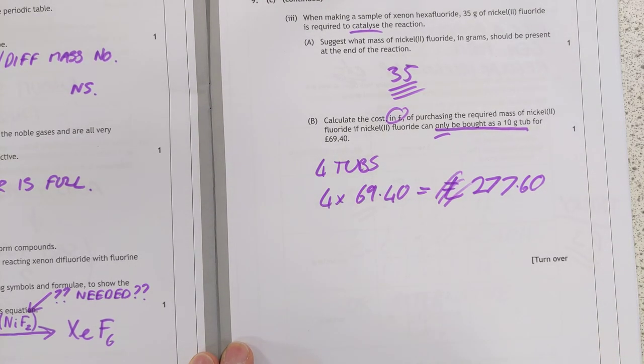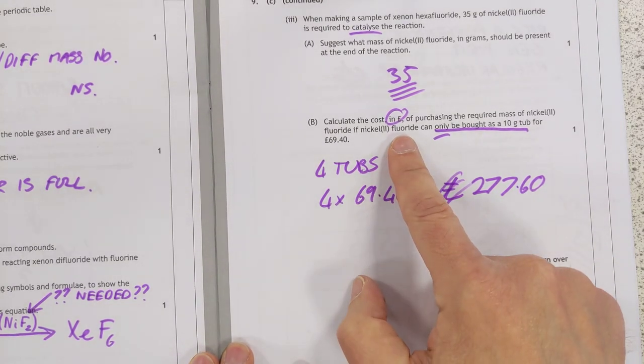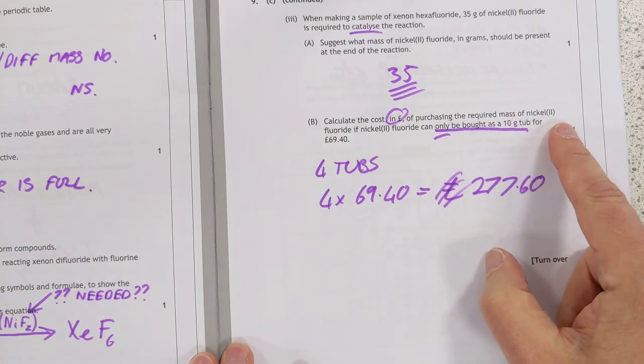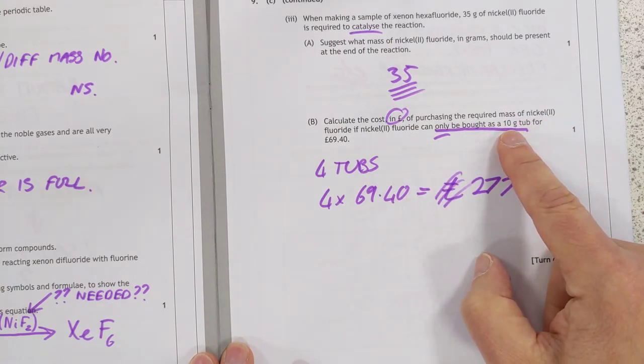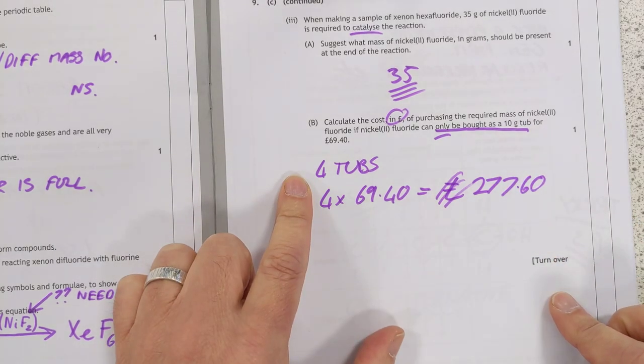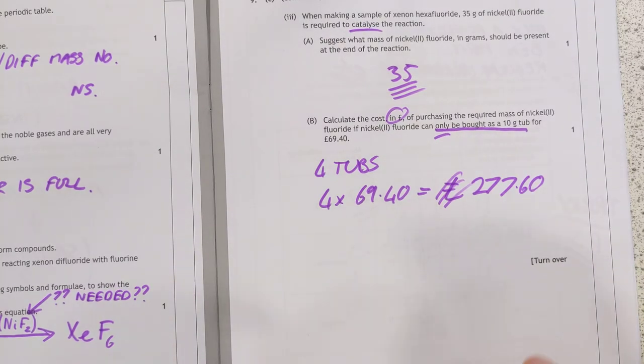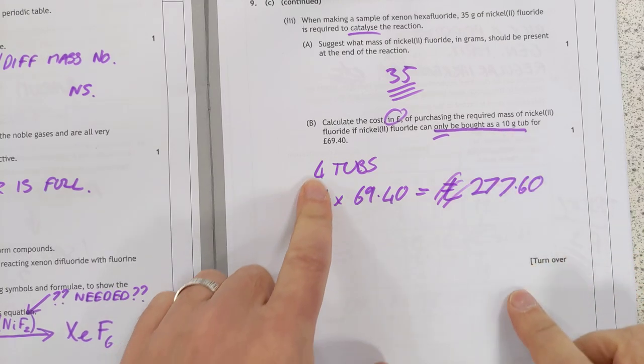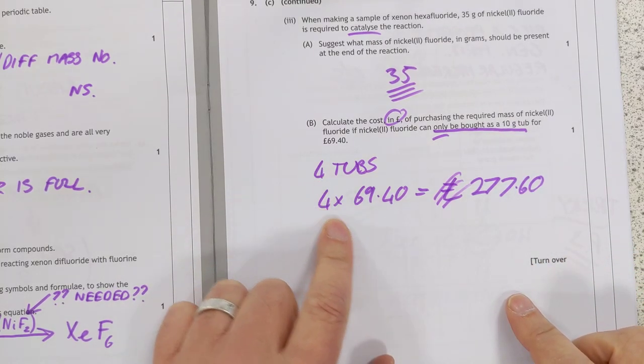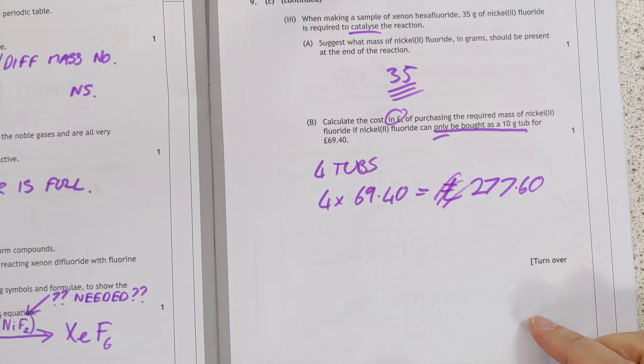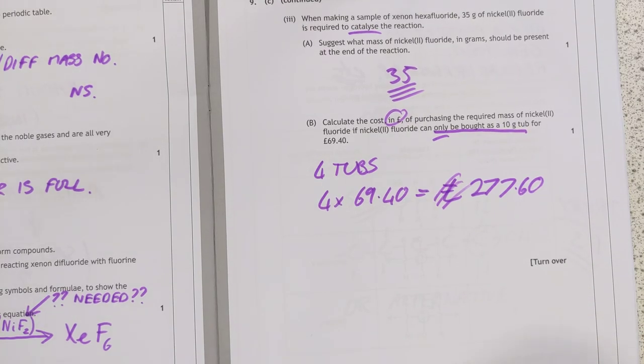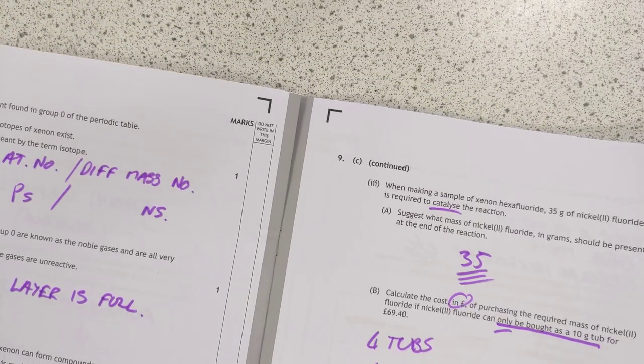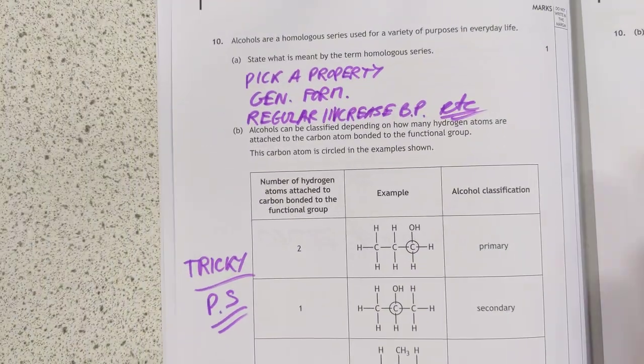Now this is almost a trick question, again on catalysis. Nickel 2 fluoride is a catalyst. It does not get used up, so therefore you would get 35 grams at the start, 35 grams at the end. Do you need the unit? I don't know. I'd be really interested to see because it doesn't quote the unit in the question. This is an interesting problem solving as well. The cost in pounds of purchasing the required mass of nickel fluoride, you can only buy it in 10 gram tubs. Hold on. Yeah, we need 35 grams of nickel fluoride. You can only buy it in 10 gram tubs. You're going to need four tubs. Which, according to my sums, would cost us £277.60. What a weird problem solving question that one is.